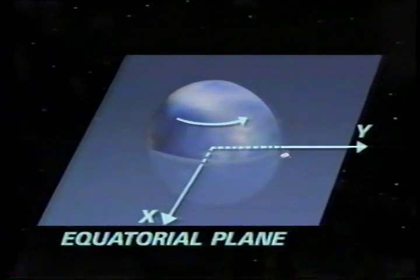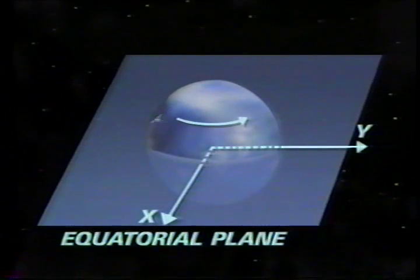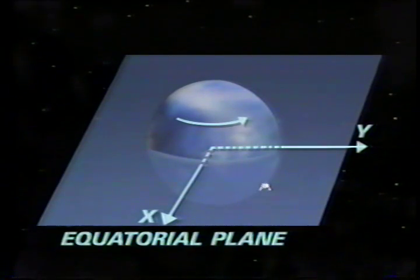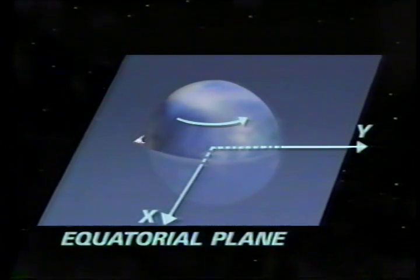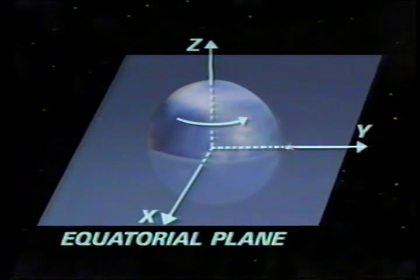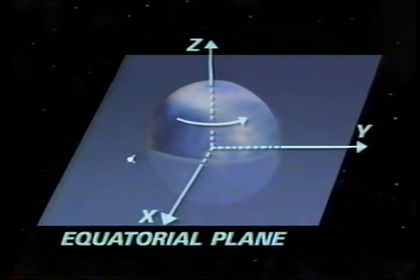The X-Y plane is the Earth's equatorial plane. The positive X axis points to the vernal equinox — the point where the Sun appears to cross the Earth's equator on its way north on the first day of spring each year. The Z axis is along the Earth's spin axis toward the north pole.